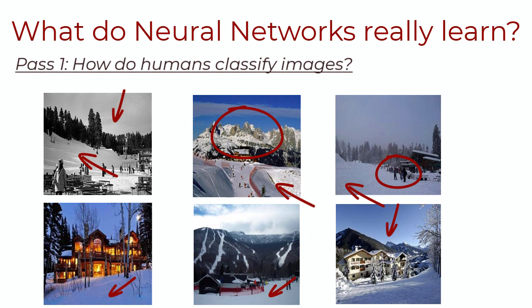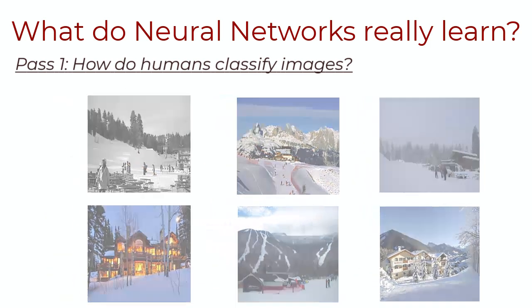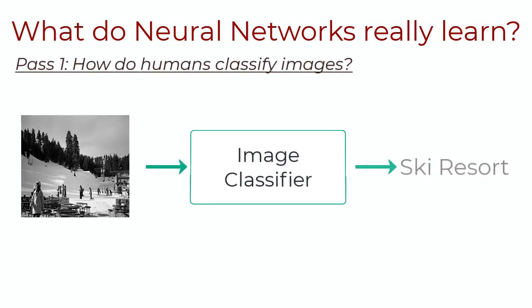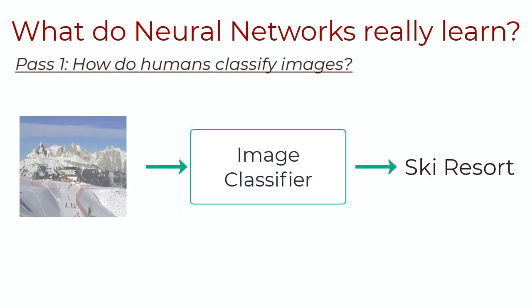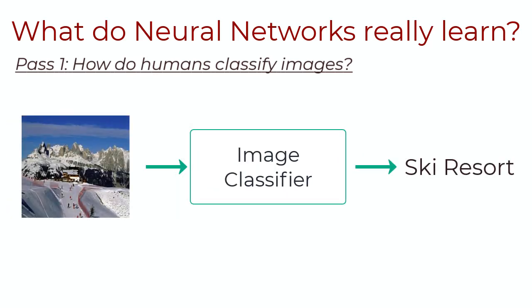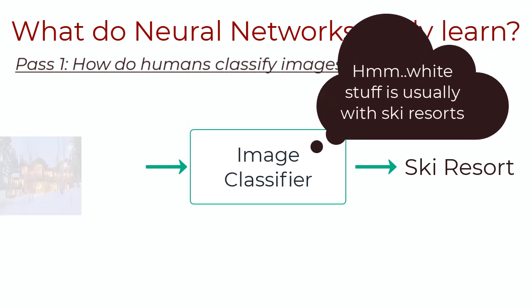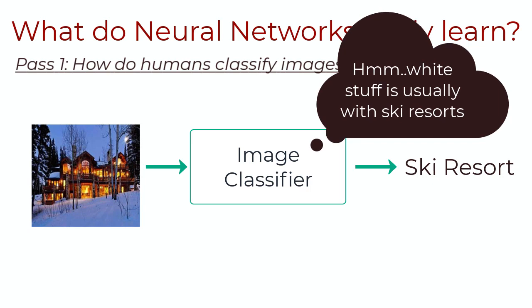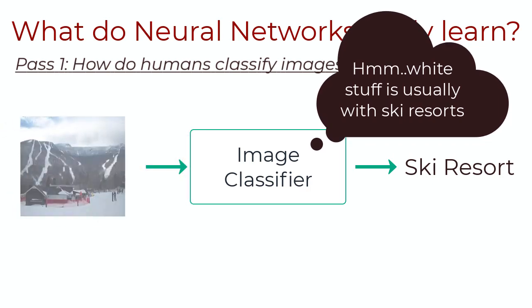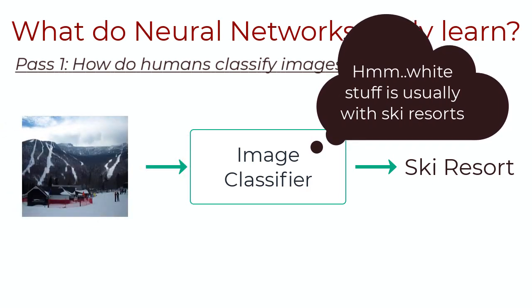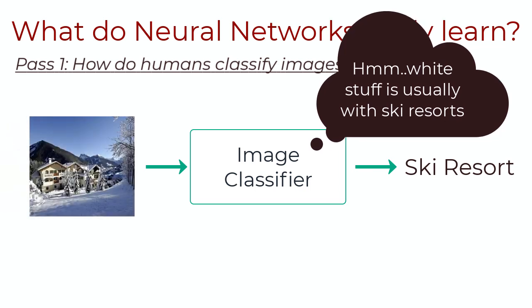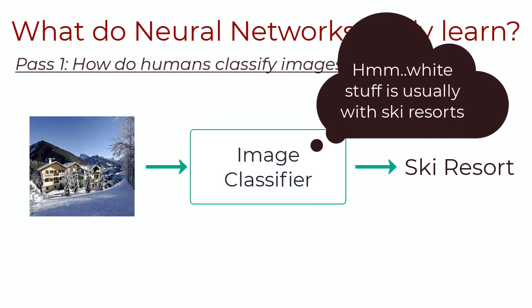Now, interestingly, a neural network can actually identify these different objects and textures of an image. In other words, the network is actually just trained to recognize ski resorts, and it will inherently know what snow is, even though it hasn't been explicitly trained to recognize snow. Now, ain't that fascinating? This is the big picture of what a neural network does, and we're now going to walk through how the neural network actually does this exactly in pass two.